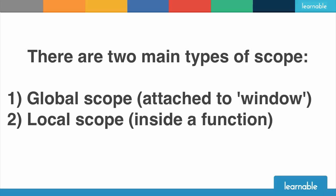When I talk about variable scope I'm talking about two main types: global scope, for variables that are available to your entire JavaScript application, and local scope, for variables that are only available inside the function in which you declare them.